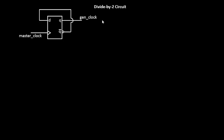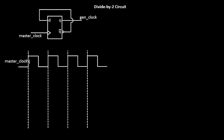The output of this flip-flop is the generated clock, which we'll call 'gen_clock' for short. Looking at the waveforms will help us understand this circuit, and then we'll create the generated clock definition at this point. The master clock has a 50% duty cycle.